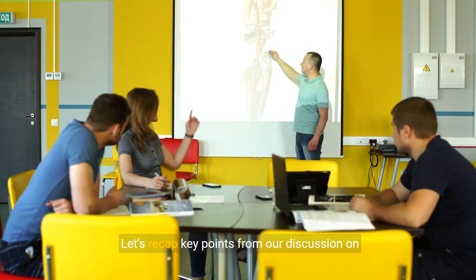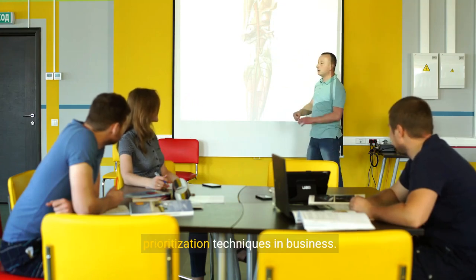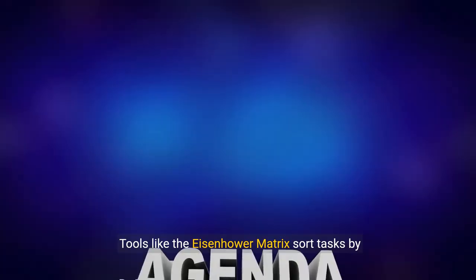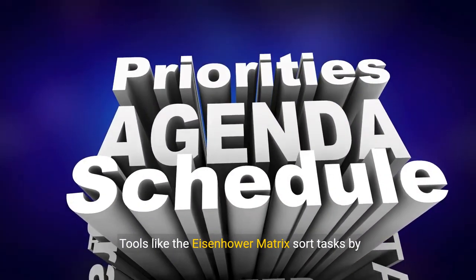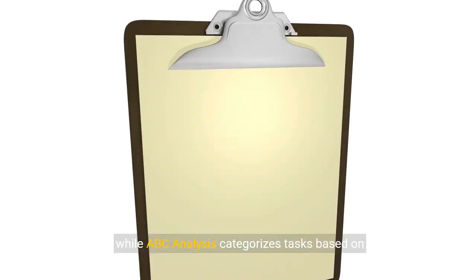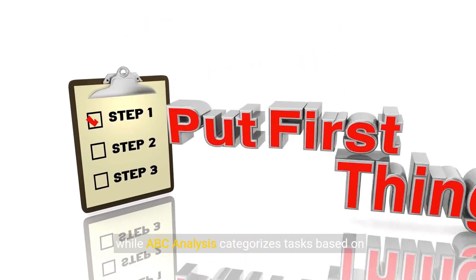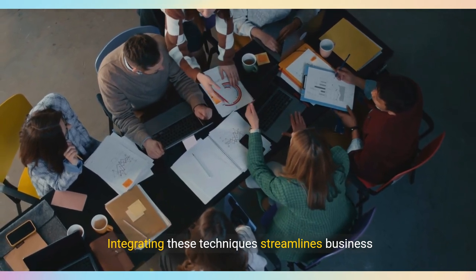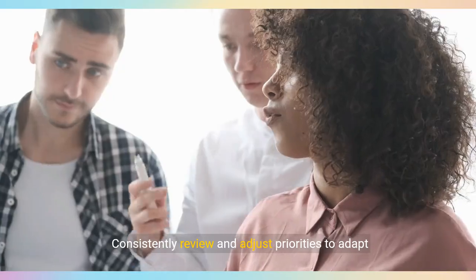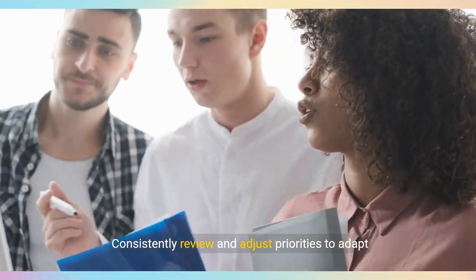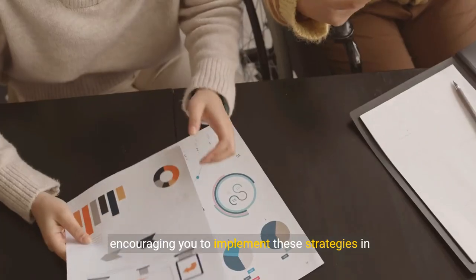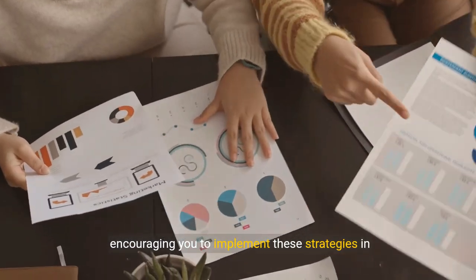Let's recap key points from our discussion on prioritization techniques in business. Prioritization enhances efficiency and productivity. Tools like the Eisenhower Matrix sort tasks by urgency and importance, while ABC Analysis categorizes tasks based on priority. Kanban offers a visual workflow for systematic management. Integrating these techniques streamlines business operations. Consistently review and adjust priorities to adapt to changing demands. As we wrap up, stay tuned for our call to action, encouraging you to implement these strategies in your workflow.